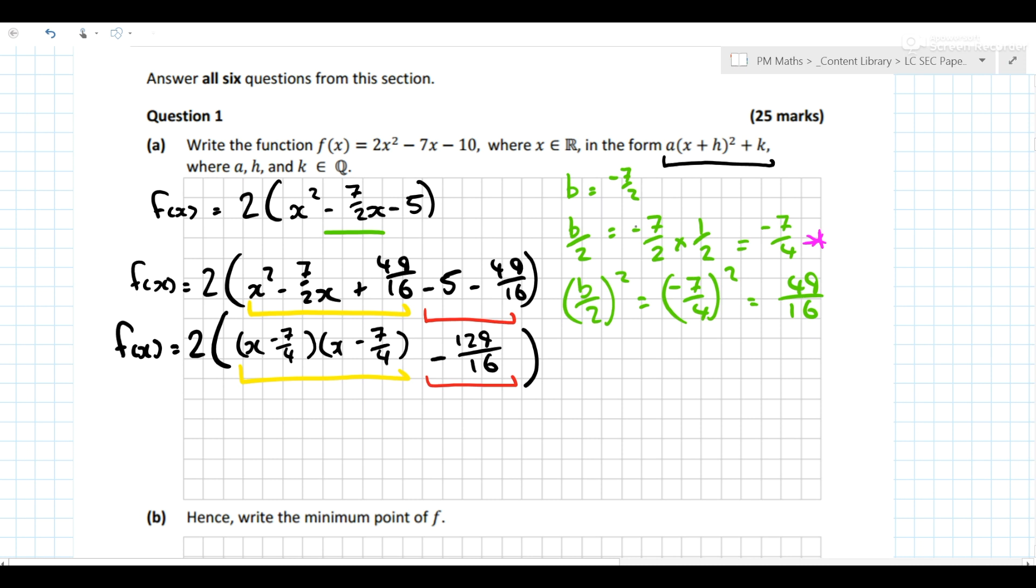That purple star, that b/2, that we use to come in here. You might notice as well that they're the same thing—the yellows, the two brackets are the same. So it's (x - 7/4)² - 129/16.